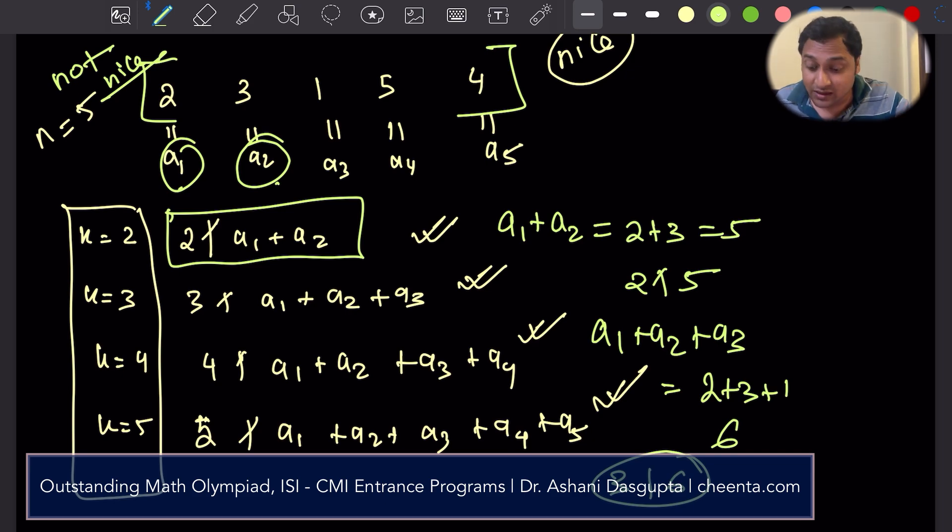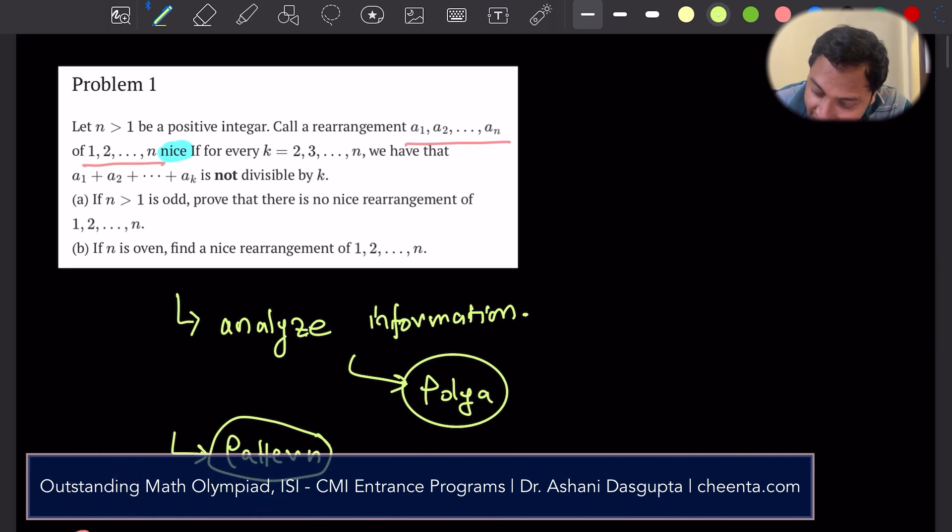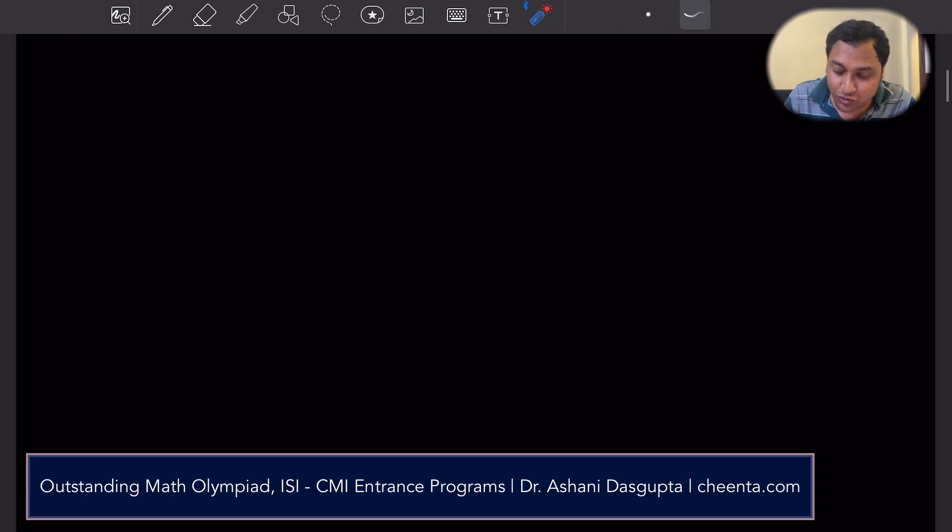We wanted 3 not to divide 6. k should not divide a1 plus a2 up to ak. So yes, this is not nice. In fact, that's what the problem says. The problem says, if n is odd, then there are no nice rearrangement. And if n is even, there is a spelling error, if n is even, we want to find a rearrangement. So, let's first show the first case when n is odd. Any odd number can be written as 2 times something plus 1. This is a very useful strategy in solving number theory problems. If you are dealing with odd numbers, write it in its form. 2 times something plus 1.